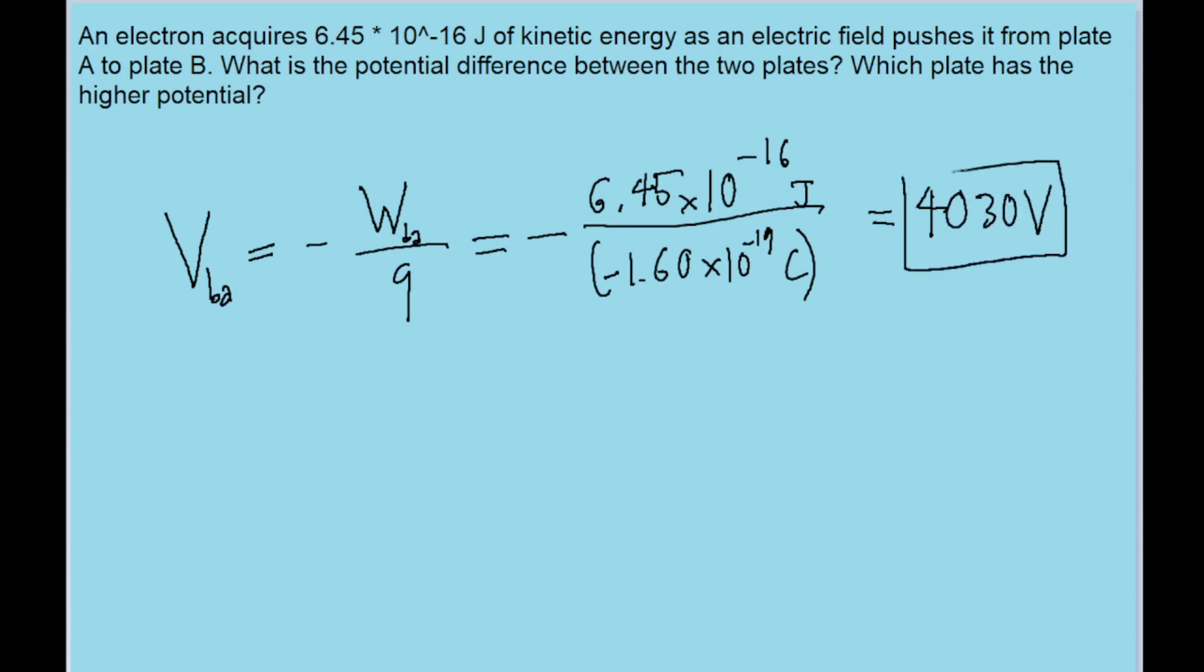This is the potential difference between the two plates. Now notice that this is a positive number. That means that the electron has moved from a low potential to a high potential. Its potential has increased.